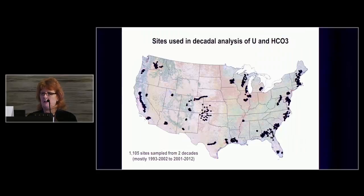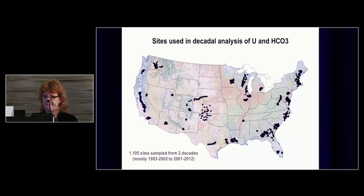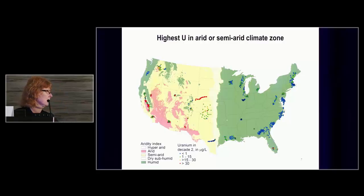So what does that mean for the broader U.S.? Will we see the same process? We don't have the solid-phase data or geochemical modeling that Juergens had, but we do have 1,100 sites from the NAWQA Decadal Change Networks that Bruce Lindsay talked about yesterday. They are mostly sampled at one point in the 1990s and then again in the 2000s.